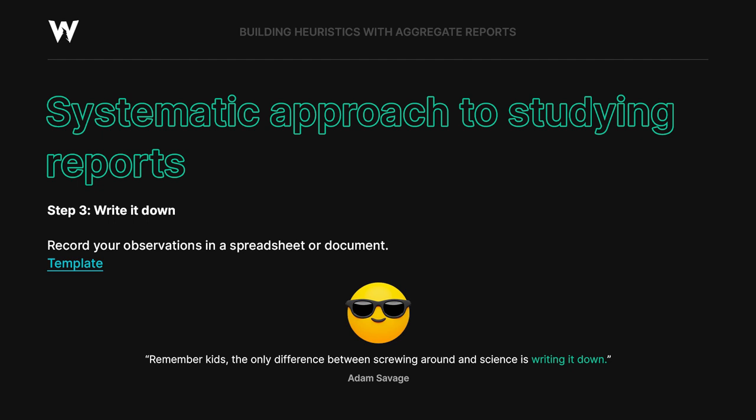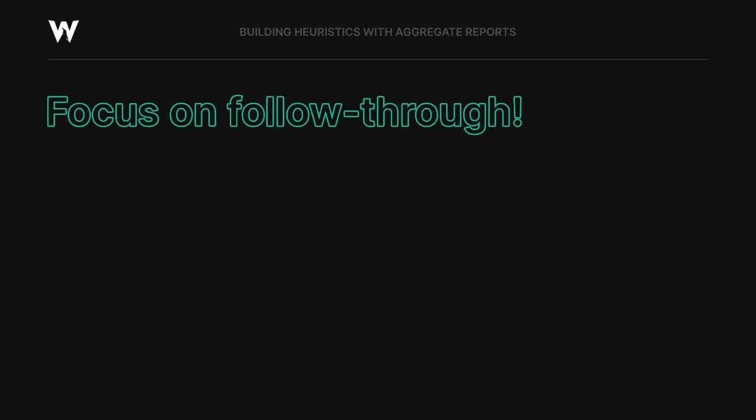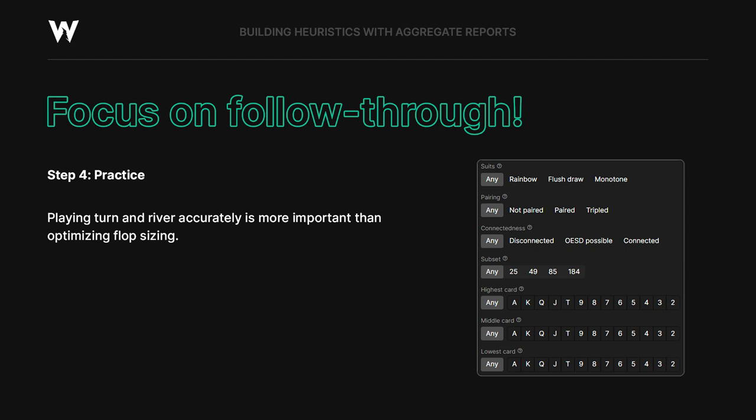Most of the learning actually occurs with the discovery process in doing this yourself. Lastly, we're going to learn how to focus on follow-through. Step four is practice, practice, practice. Playing turns and rivers accurately is more important than optimizing flop sizing. We can use turn reports to get a sense of the strategy on how to continue on some board in some line. And similarly, we can take our discovered heuristics, plug them into the trainer, and then use those settings to practice strategically similar boards.